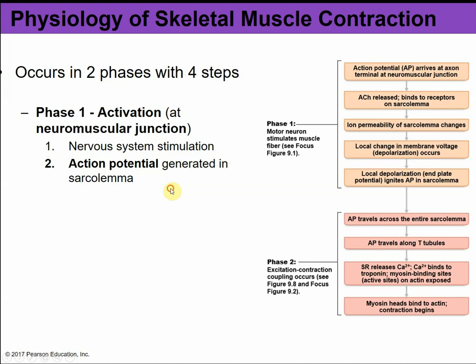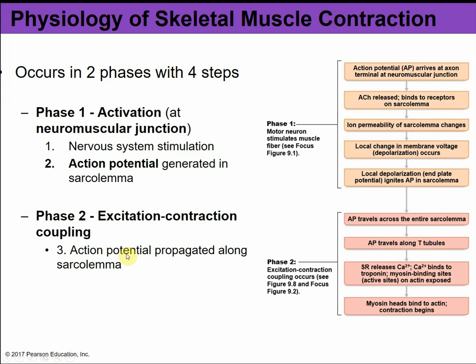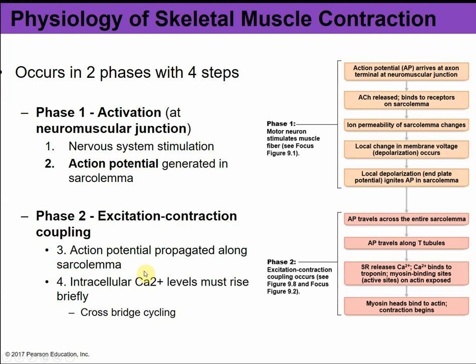Phase two is called excitation-contraction coupling, linking the excitation from phase one to the actual contraction. Step three involves the action potential propagating along the sarcolemma. Step four requires calcium levels within the muscle fiber to rise briefly inside the cell, which leads to crossbridge cycling.